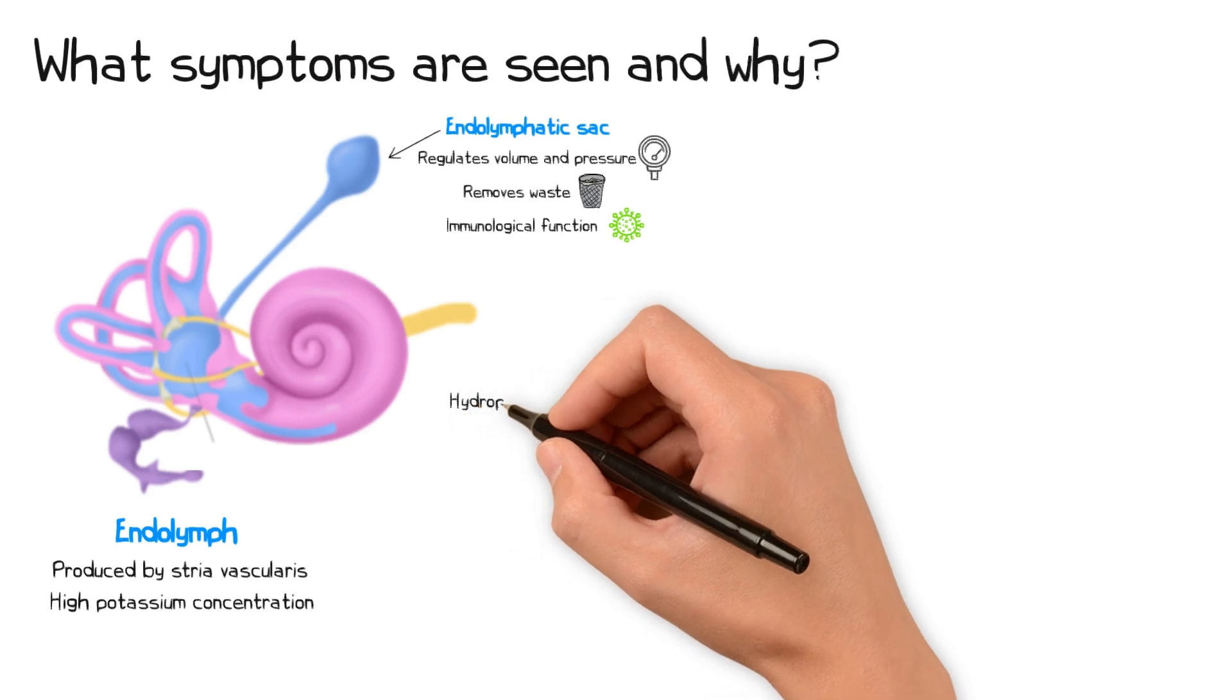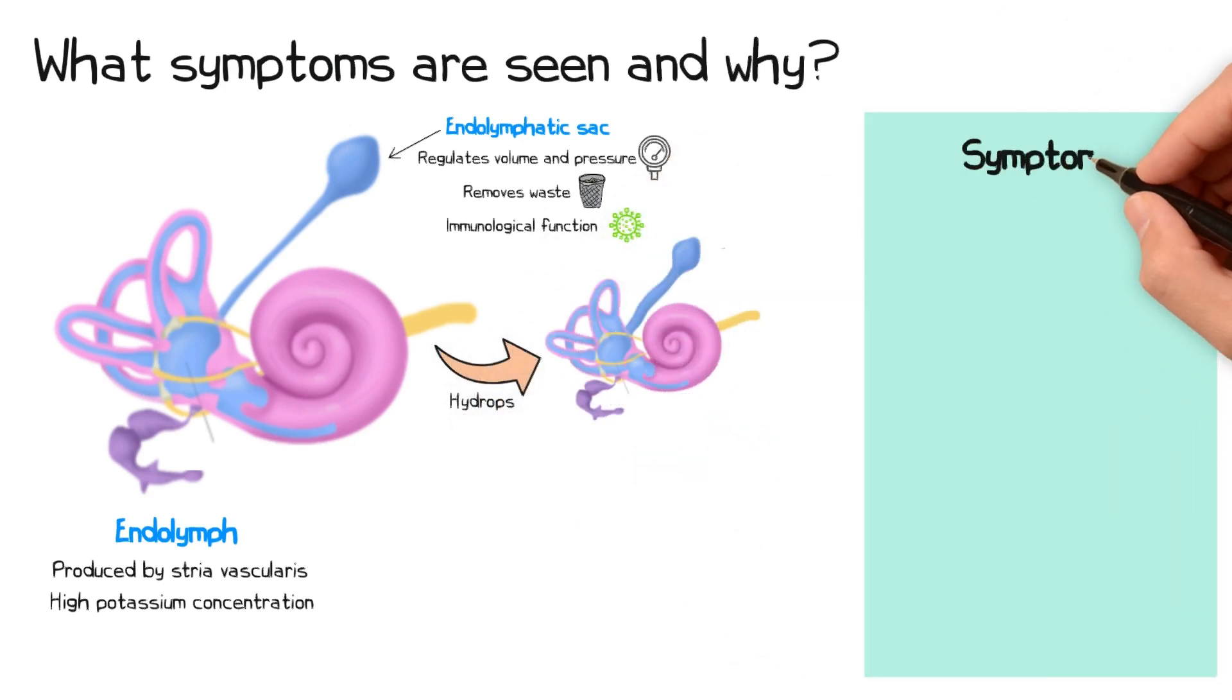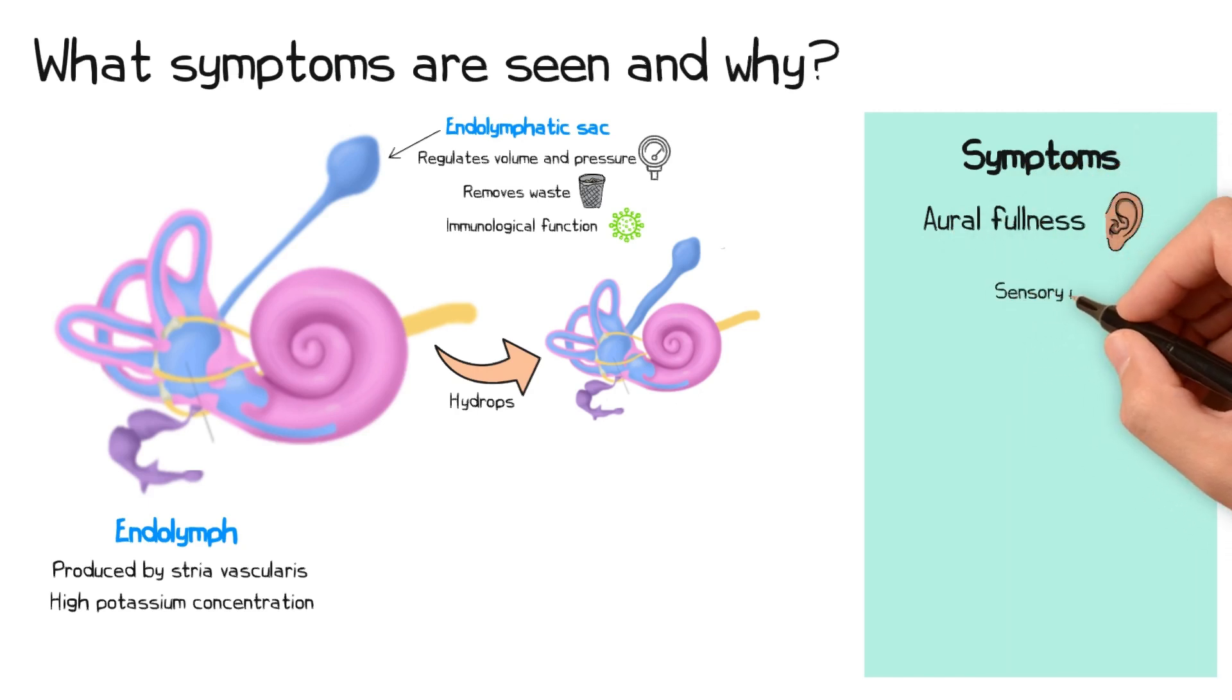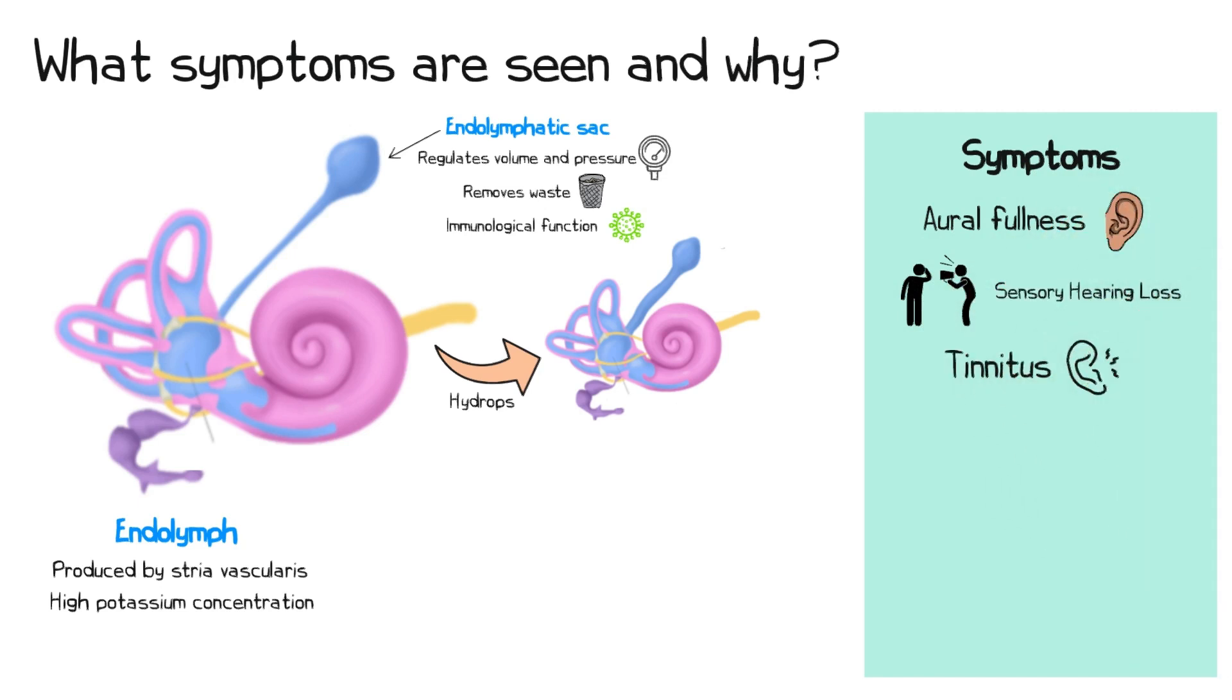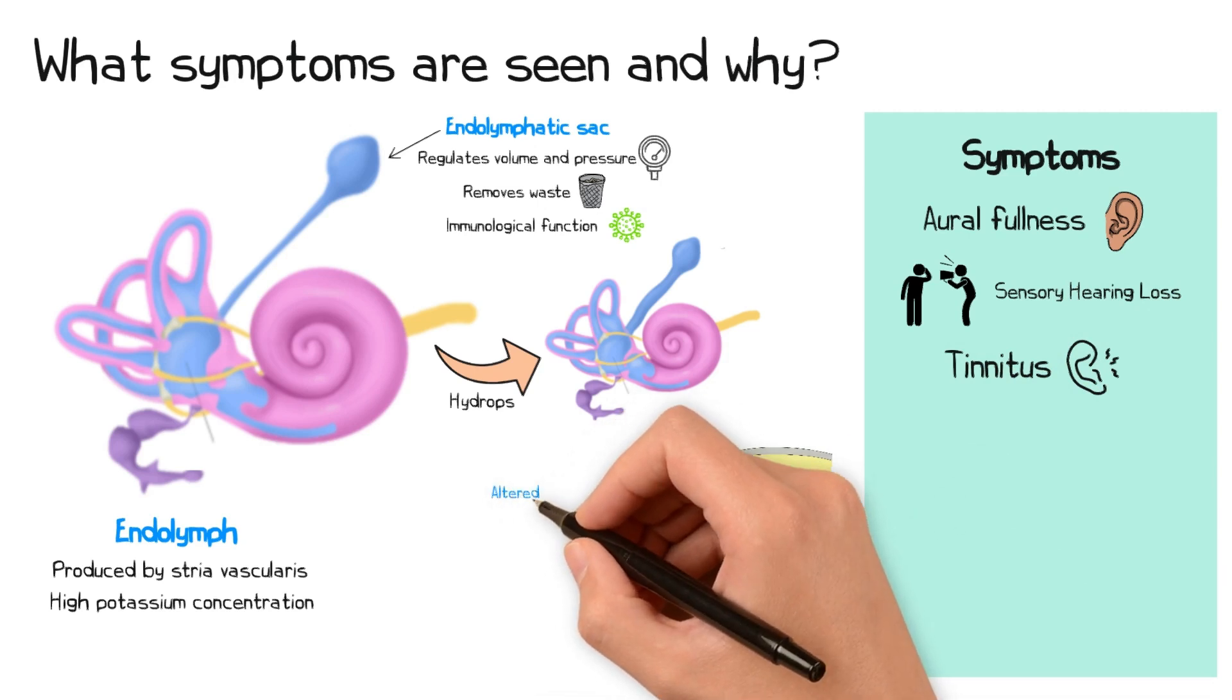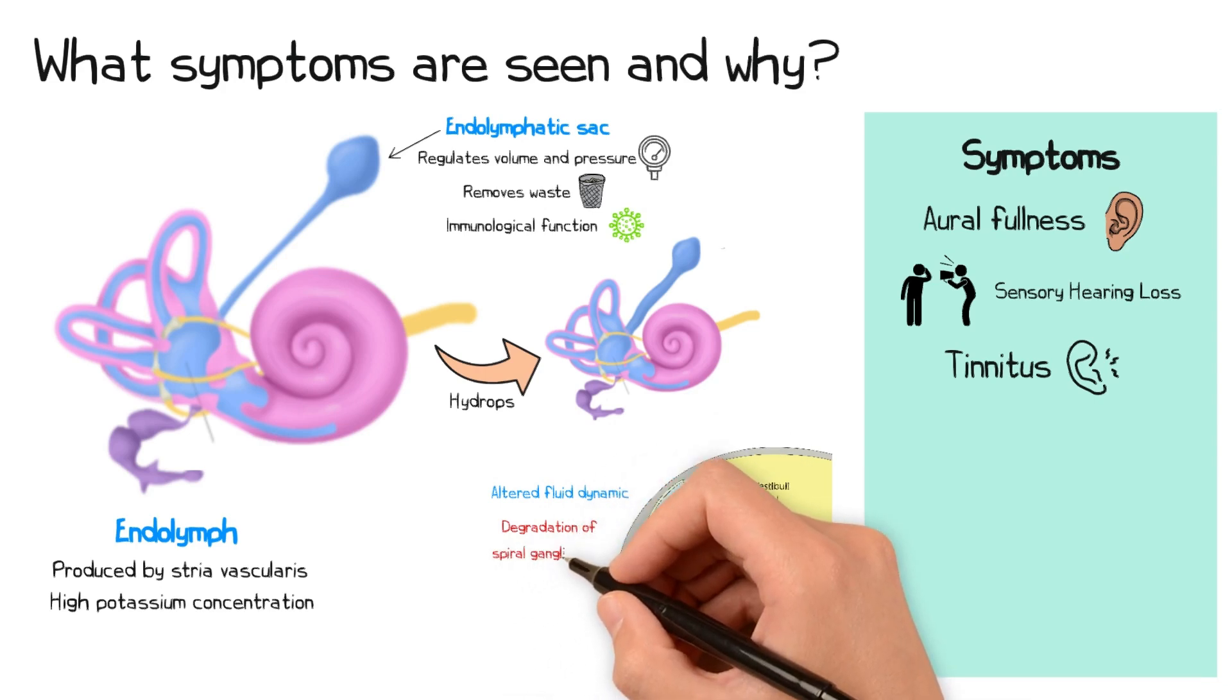With hydrops, these endolymph-containing spaces become distended, causing the sensation of aural fullness. In addition, the distended scala media results in a sensory hearing loss and/or tinnitus. This may be because of an altered fluid dynamic through the deformed space, but potentially also from degradation of surrounding spiral ganglion cells.